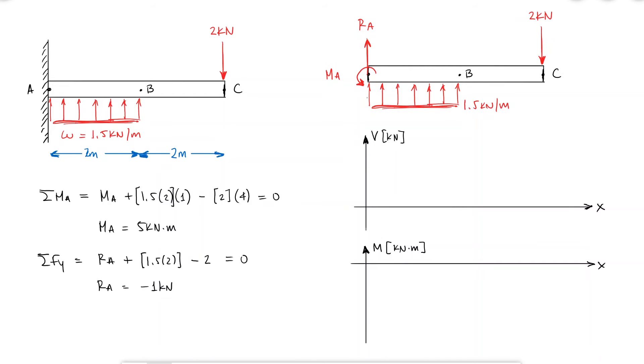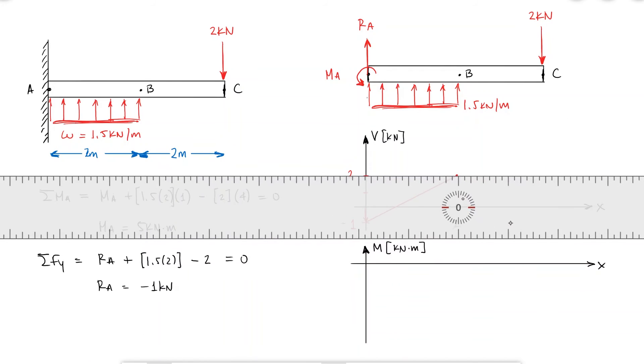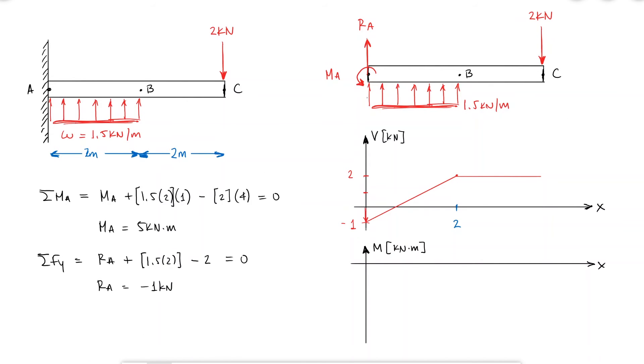The shear diagram for x equal to 0 will find the reaction at a and from x equal to 0 to 2 I'll have a slope of 1.5, which brings me up 3 units to a value of 2. From x equal to 2 to 4, there are no external forces, so the value for v remains the same. And at x equals to 4, I find an external force of minus 2 kN.